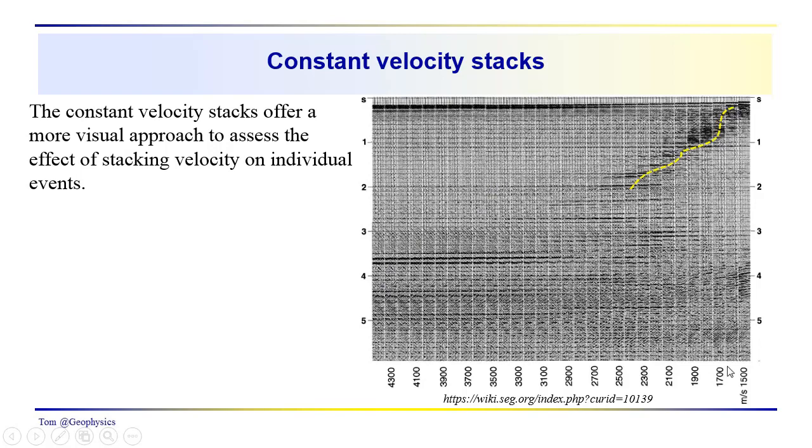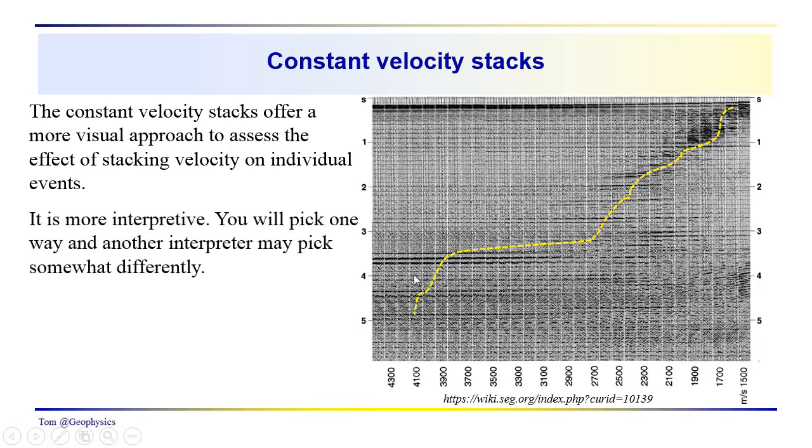So again, the interpreter is making picks. Okay, up here, I think a velocity of around 1,600 meters per second is good. 1,700 here, 1,900 here, 2,300 over here, and so on. So you're putting together a velocity function, carrying it through your data. This would be the velocity function that you would use to stack the data. So I think you can see where this is interpretive. You're going to pick one way. I'll pick another. Your neighbor's going to pick something different. But the idea is that you should be able to get into a ballpark. You should be able to get a fairly coherent stack. Enhancement of your signal attenuation of noise by going through this process.